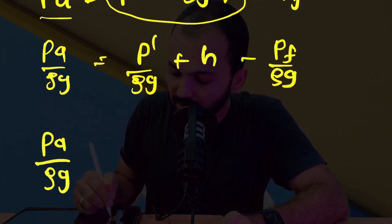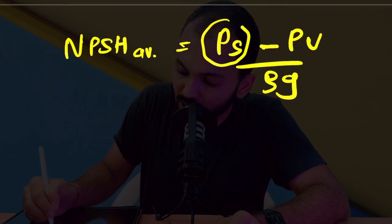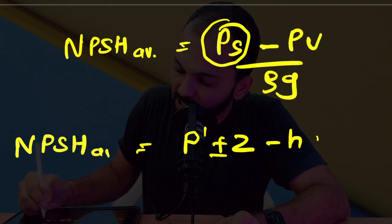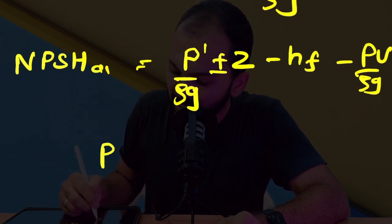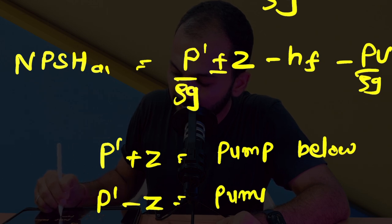Putting these values into the NPSH available equation: NPSH available = (p-dash ± z − hf − pv) / ρg. If we consider p-dash + z, that means the pump is below the liquid surface; if we consider p-dash − z, the pump is above the liquid level. This is how, by pressure balancing, we can calculate the pressure needed to find NPSH available, and confirm whether NPSH available is greater than NPSH required. In the next video, we will discuss all terms in the pump performance curve, characteristic curve, affinity law, and overall pump performance.